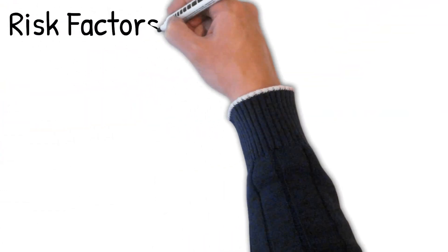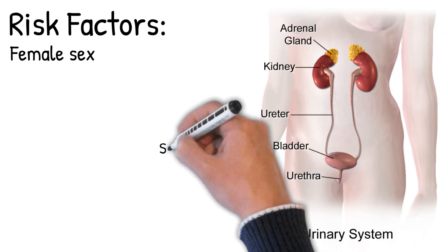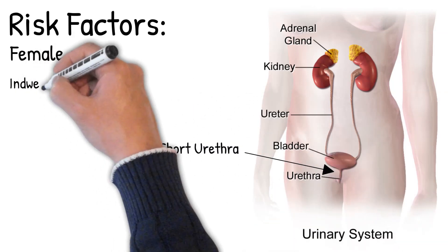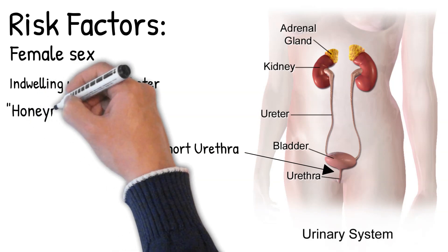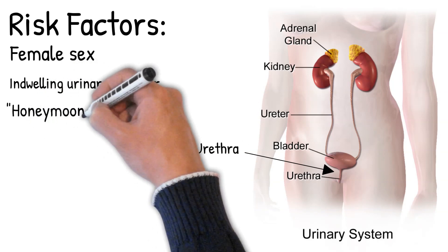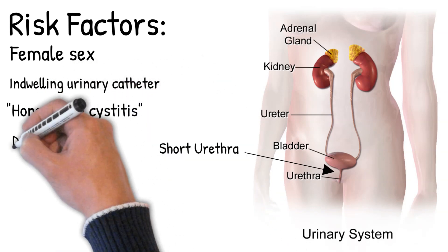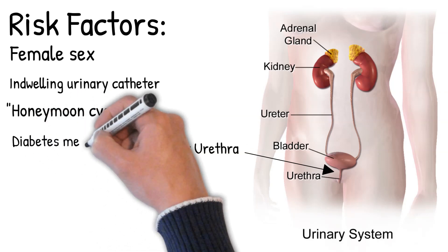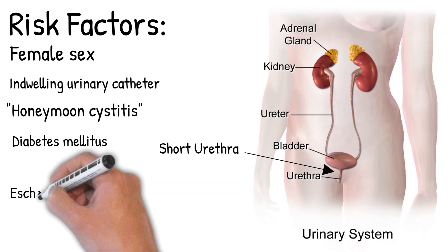Risk factors of cystitis: Female sex — females have a short urethra, allowing pathogens a short passage into the urinary bladder. In-dwelling urinary catheter. Sexual intercourse — honeymoon cystitis occurs from trauma to the urethra from frequent sexual intercourse. Diabetes mellitus.